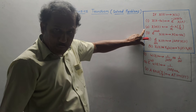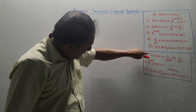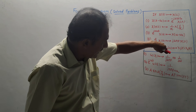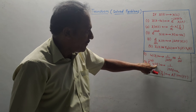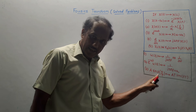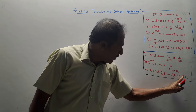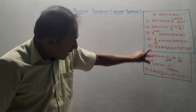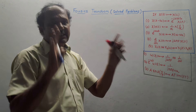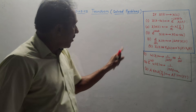Apart from properties, I have written some important standard formulae. First: u(T) has Fourier transform 1/(J2πF). Second: e^(−aT)·u(T) has Fourier transform 1/(J2πF + a). Third: A·rect(T/capital_T) — this rectangular signal's Fourier transform is A·T·sinc(FT). We have already proved these. While solving numericals, we will use these as standard formulae — we will not derive them unless a separate question asks for it.